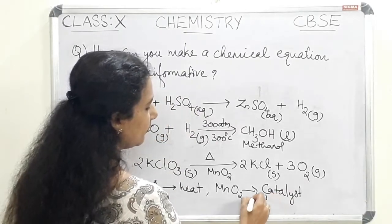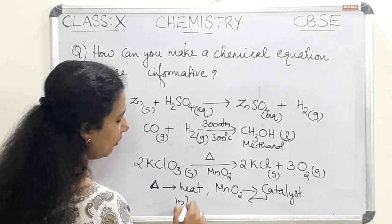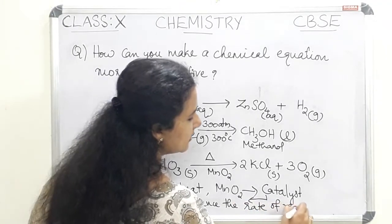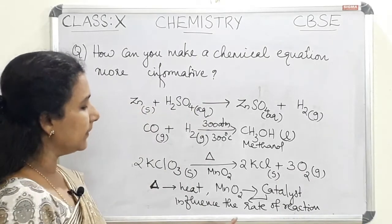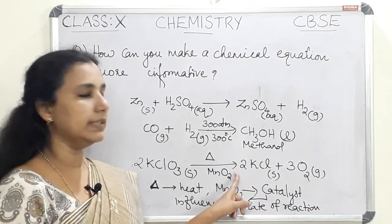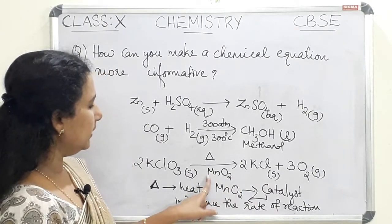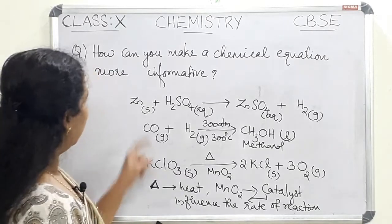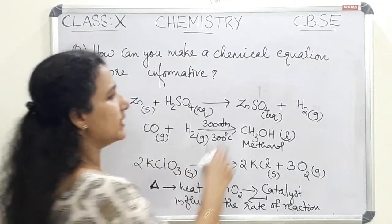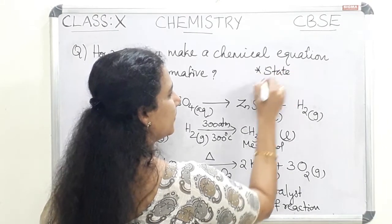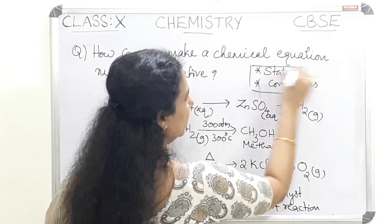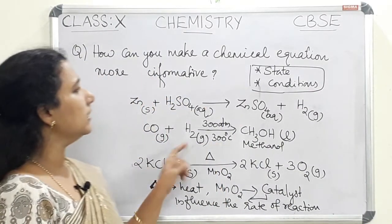A catalyst influences the rate of reaction. The speed of the reaction can be increased by adding a catalyst. The catalyst can also be written on the arrow. So, to make chemical equations more informative, the two points are: first, add the physical state, and second, indicate the reaction conditions such as temperature, pressure, and catalyst.